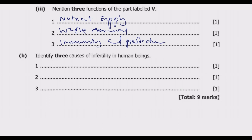A fifth function is gas exchange. The placenta allows for the exchange of oxygen and carbon dioxide between the mother and the fetus. Oxygen from the mother's blood is transferred to the fetus, and carbon dioxide from the fetus is transferred to the mother as part of excretion. These are five functions, but in this case you are only requested to give three.